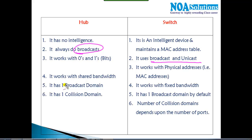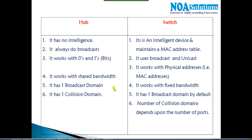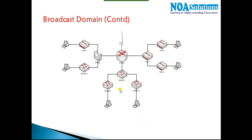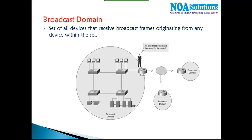There is something called broadcast domain and collision domain. Let us first try to understand what broadcast domain and collision domain are, and then we'll come back to the difference between hub and switch. The broadcast domain means the set of devices receiving a broadcast originated by any one device within the set.